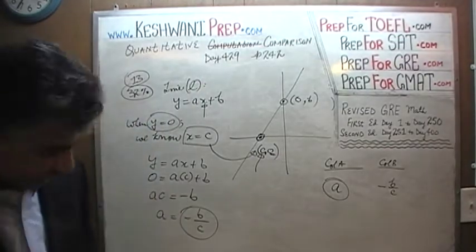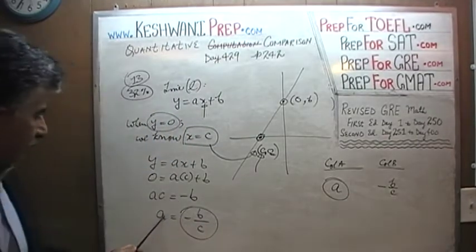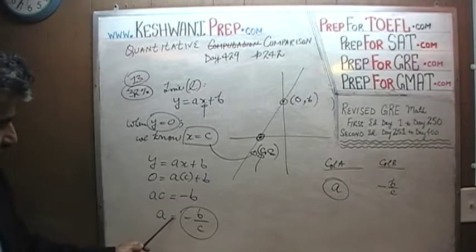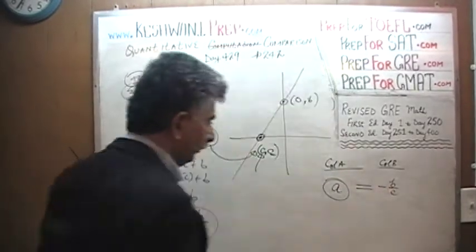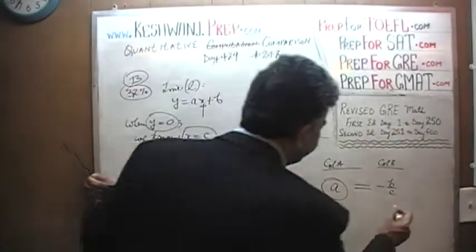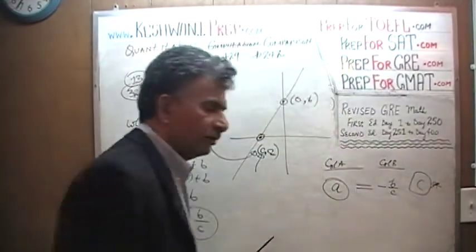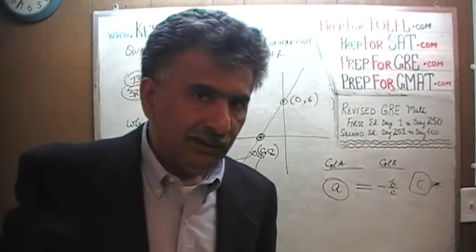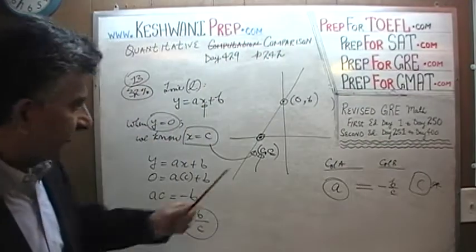We find that a is equal to negative b over c. The answer is C, because the two quantities are equal — we just found that a equals negative b over c.